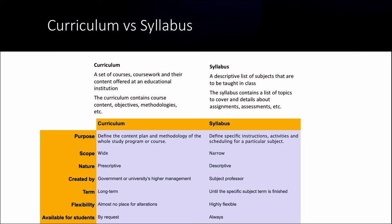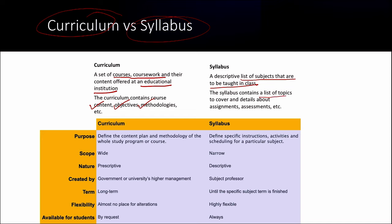Next, we move on to the differences between curriculum and syllabus. Curriculum is a set of courses or coursework and their content offered at an educational institution. Whereas the syllabus is a descriptive list of subjects to be taught in class. The curriculum contains course content, objectives and methodologies. Whereas the syllabus contains just the list of topics to cover and details about assignments and assessments. The basic purpose of curriculum is to define the content plan and methodology of the whole study program or course.